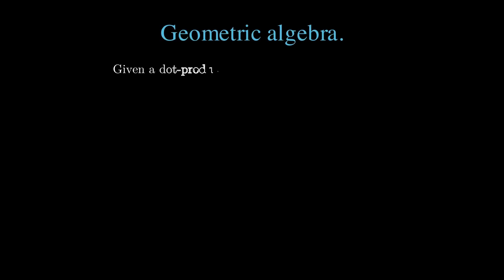A geometric algebra is said to be generated from a vector space that has an associated dot product, i.e. a dot product space.